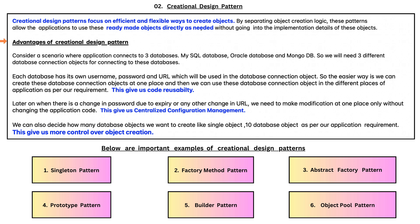Consider a scenario where an application connects to three databases: MySQL, Oracle, and MongoDB. We will need three database connection objects. Each database has its own username, password, and URL used in the connection object. The easier way is to create these database connection objects at one place and use them in different parts of the application as needed. This gives us code reusability.